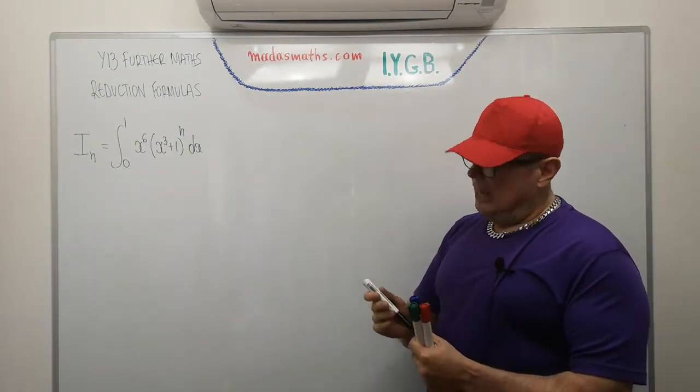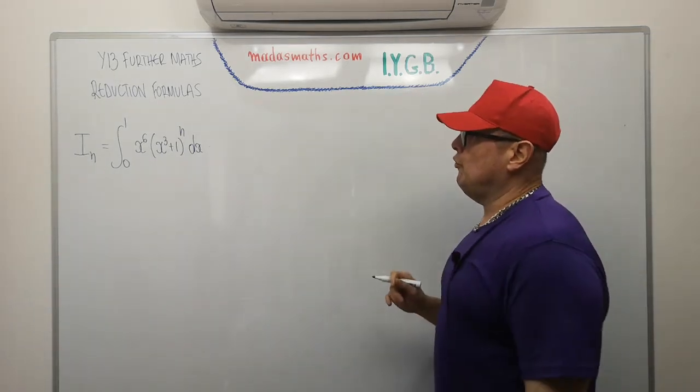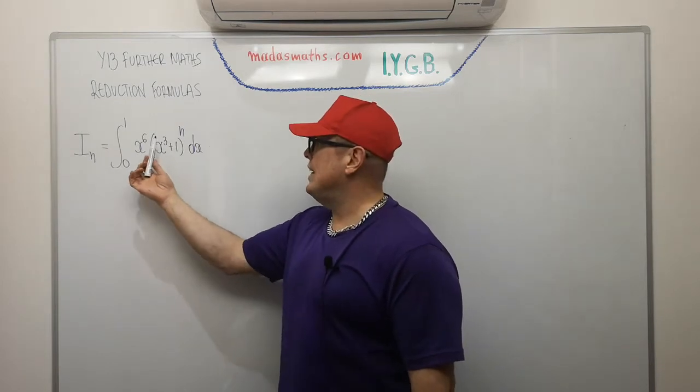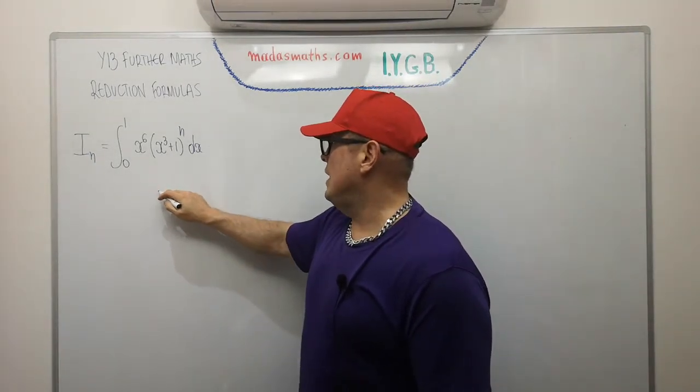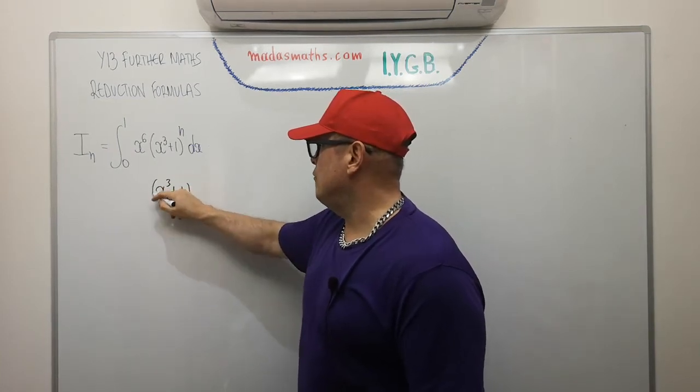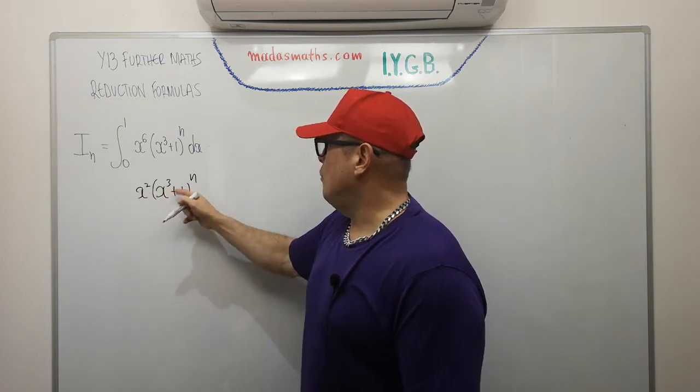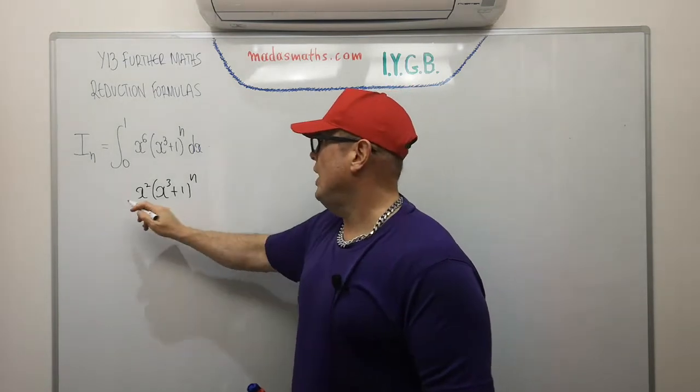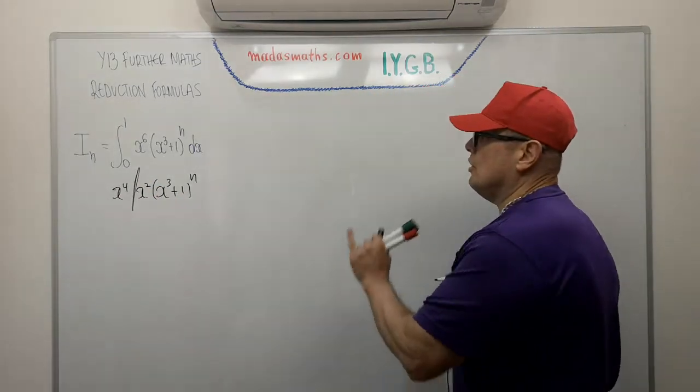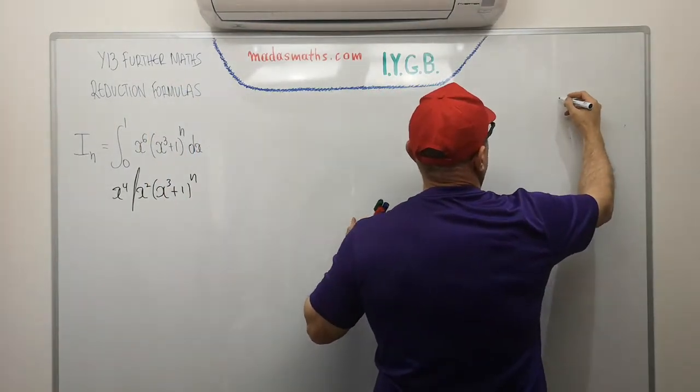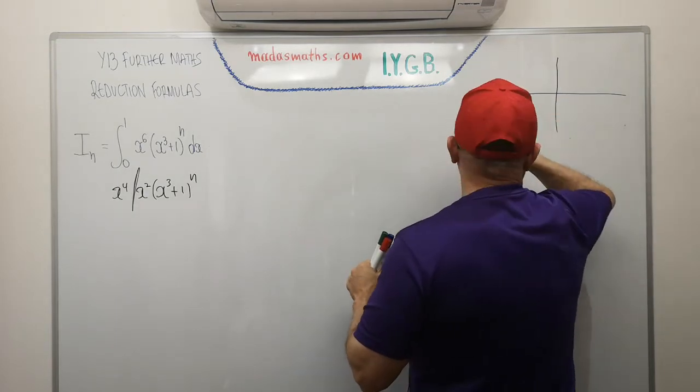So how do we approach something like this? Standard method for most reduction formulas is integration by parts. So my initial thoughts are, do I do the integration by parts by keeping these two things as I see them, x to the sixth times this bracket, or I do have a second choice which I'm going to try if the first one doesn't work. I'm going to use a grid.